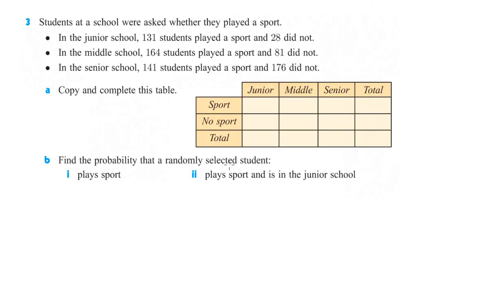Let's take a look at number three. Students at a school were asked whether they played a sport. In the junior school, 131 students played a sport and 28 did not. Part A says copy and complete the table. So, 131 juniors played a sport and 28 did not. In middle school, 164 played a sport and 81 did not.